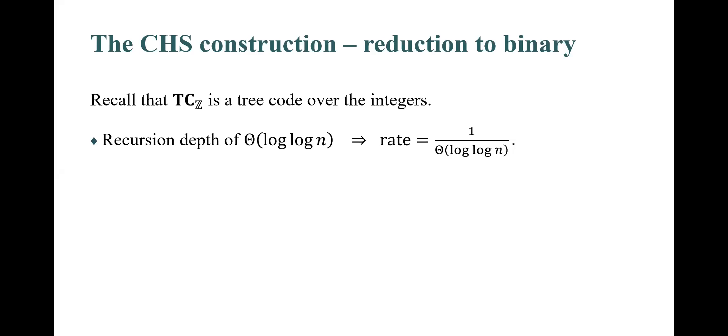Recall that T_C_Z is a tree code over the integers. To reduce its input alphabet to binary, CHS applies their tree code recursively until they reach depth log n. However, this recursion has a cost. Since its depth is log log n, it causes the rate to vanish.